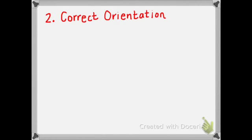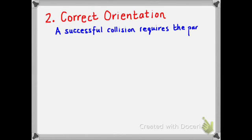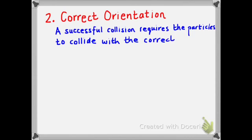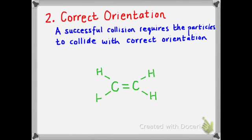Secondly, they must collide with the correct orientation. A successful collision can only take place if the particles collide with the correct orientation. Let's consider a molecule of ethene — two carbon atoms with a double bond. Ethene undergoes addition reactions, and a hydrogen halide such as HCl will react with ethene to form chloroethane.